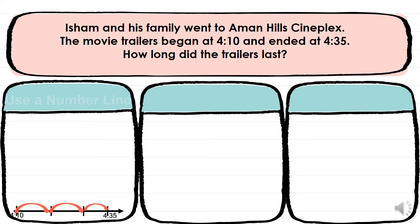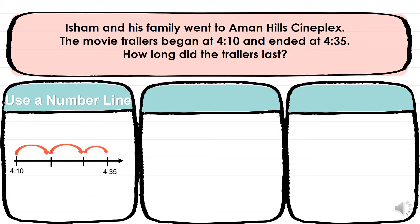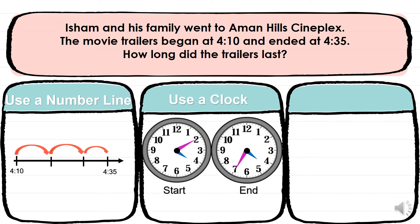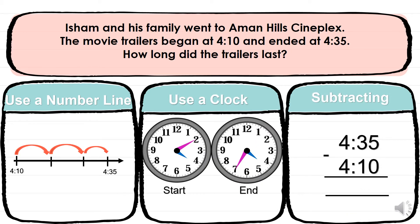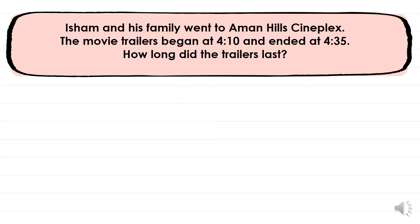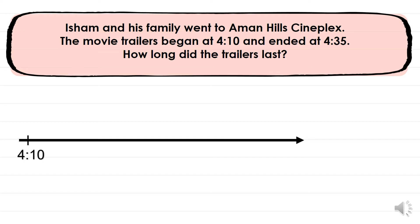One way is to skip on a number line. Another way, which we did last week, we can also skip using a clock. We can also subtract, but we won't be using subtraction very much this year because it can get complicated with the minutes — we don't borrow like you do when subtracting regular numbers. So the main strategies we're going to use are the number line and the clock.